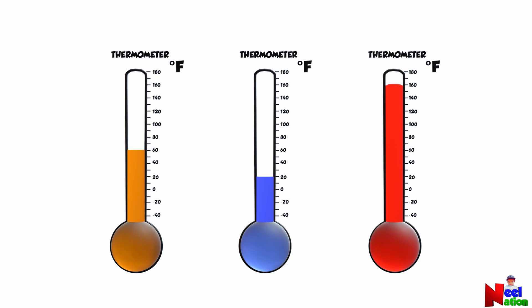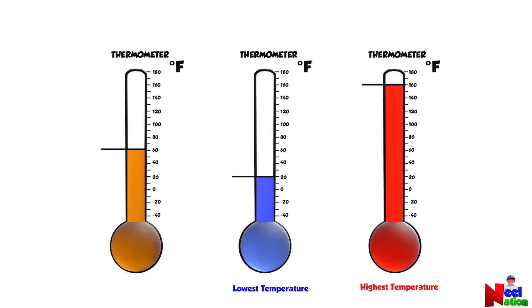Here you have three thermometers, each showing different temperatures. Can you identify the thermometer with the highest temperature? And which one shows the lowest temperature? The red thermometer shows the highest temperature. The blue thermometer shows the lowest temperature. The liquid in the red thermometer has moved up to the highest level. The liquid inside the blue thermometer is at the lowest level.